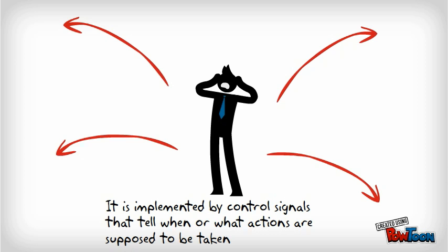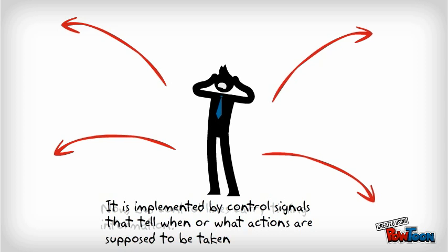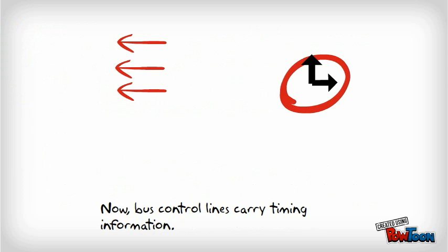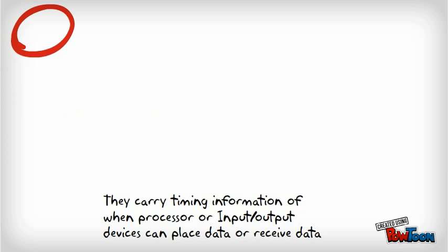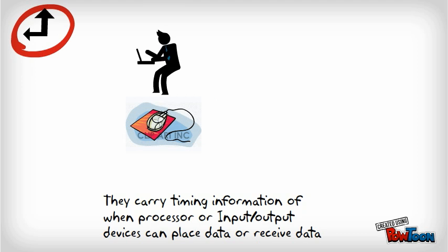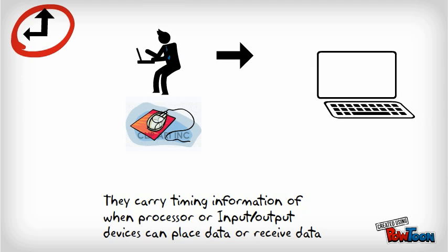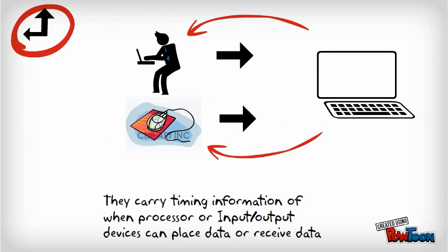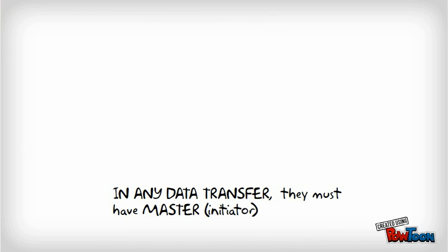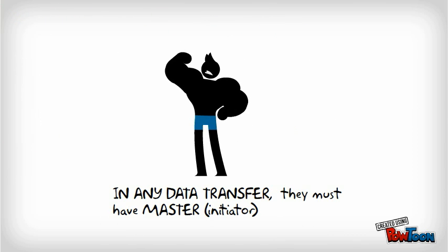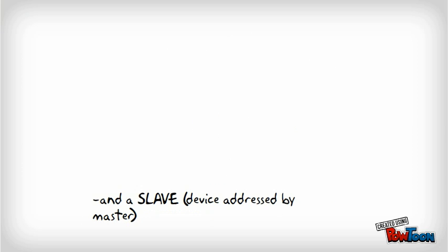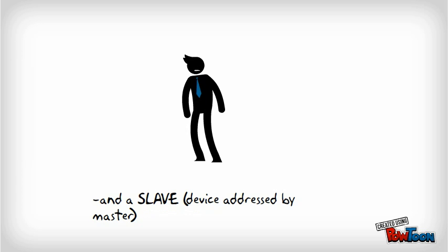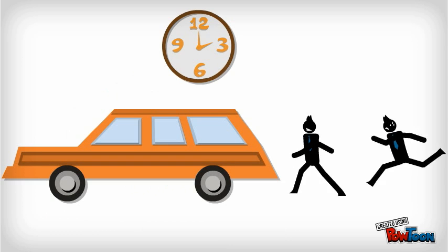It is implemented by control signals that tell when or what actions are supposed to be taken. Bus control lines carry timing information of when the processor or input/output devices can place data or receive data. In any data transfer, they must have a master that initiates and the slave device addressed by the master.